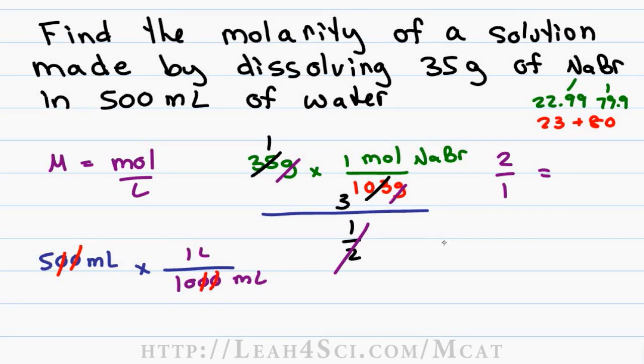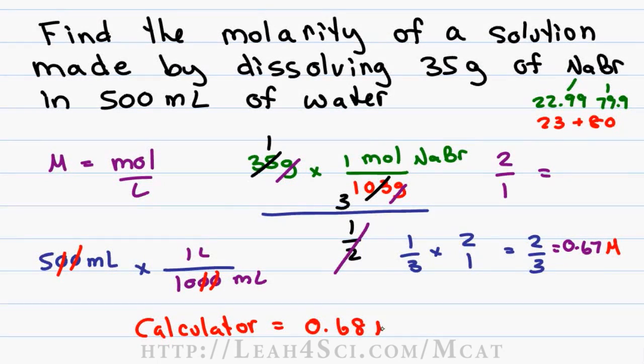My new simplified equation is 1 over 3 times 2 over 1 which is simply 2 over 3. This is a fraction that you should know which equals 0.67 molar. Punching the exact values into the calculator I get 0.68 molar which on the MCAT is close enough. I set up one series of fraction times fraction times fraction, found what I can simplify or cancel out leaving me with a minimal number of calculations that I can easily do in my head.